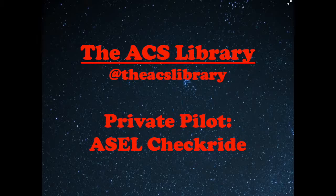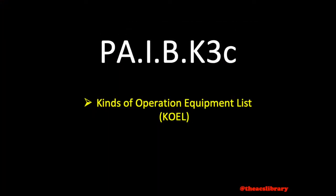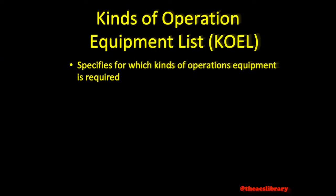Today's video lesson is over the kinds of operations equipment list covered in Advisory Circular 91-67. The kinds of operations equipment list, or KOEL, is exactly what it sounds like: a list that specifies for which kinds of operations a specific piece of equipment is required.